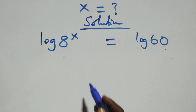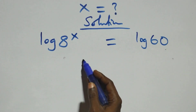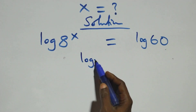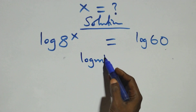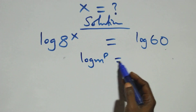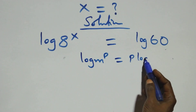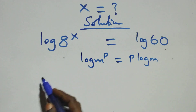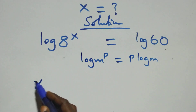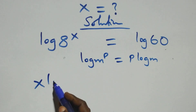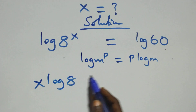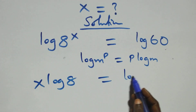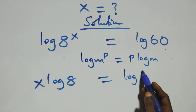The next step, we apply the power of logarithm. When we have log m raised to power p, this is the same thing as p log m. At this here, we have x log eight equals to log sixty.